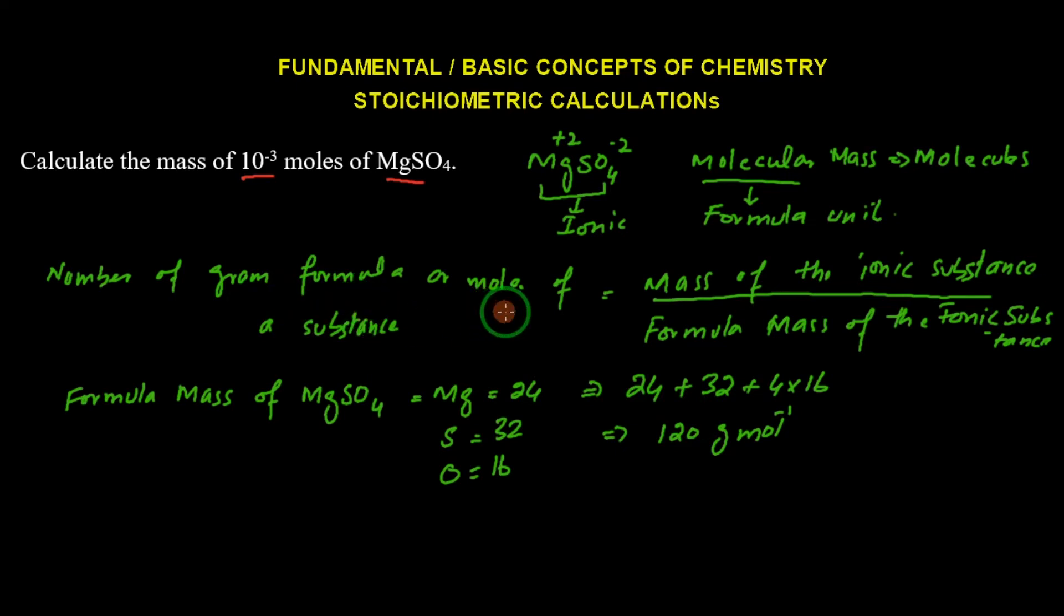The number of gram formula mass which is already given is 10^-3. Using this formula, we find the mass of the ionic substance. Formula mass of magnesium sulfate is 120 grams per mole.